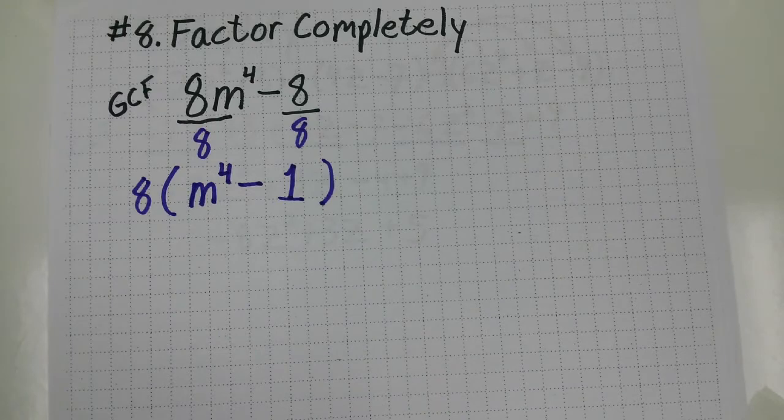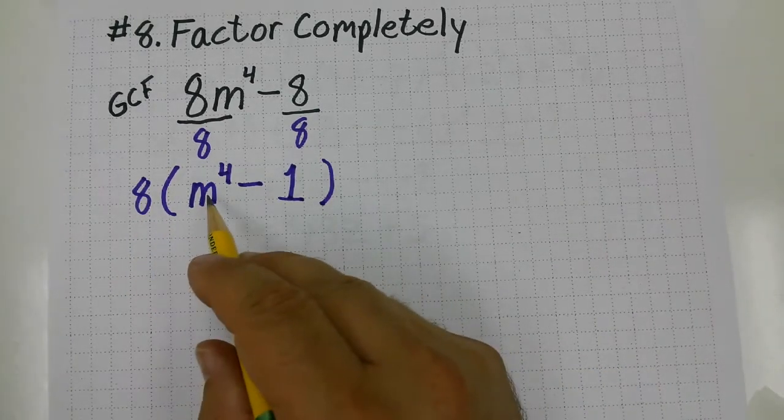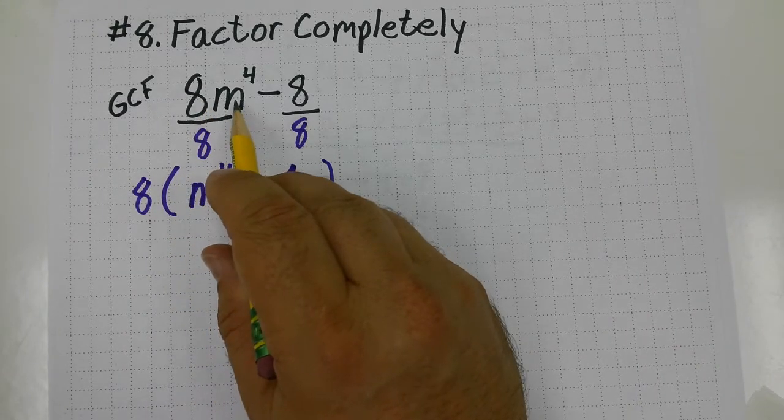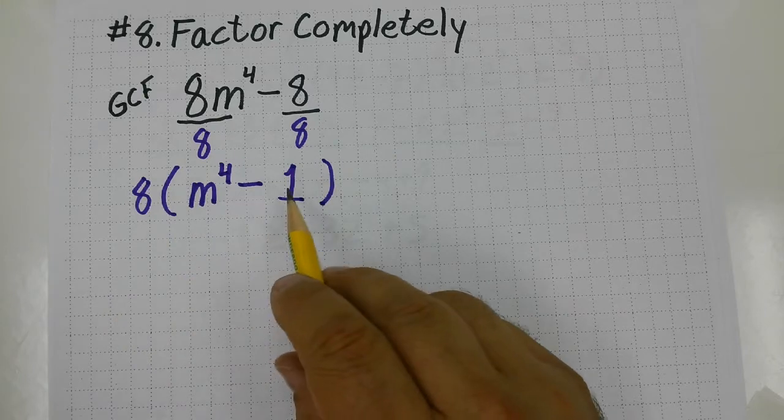Now notice, you can check this if you go ahead and distribute that 8 across the quantity. 8 times m to the fourth gives me back the original 8m to the fourth, and 8 times 1 gets me back to the original 8. I'm not done.